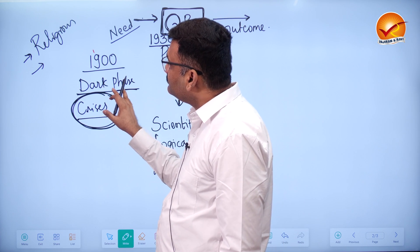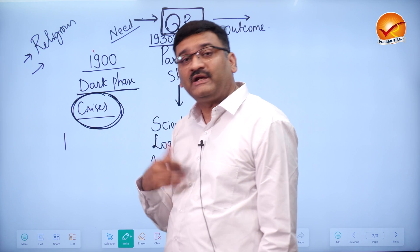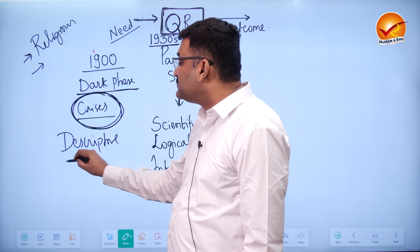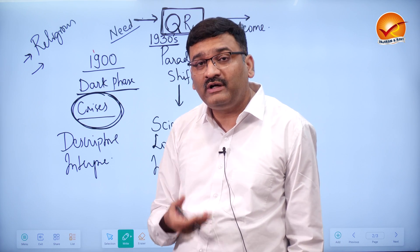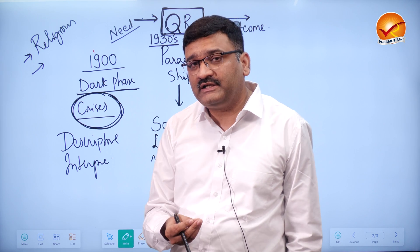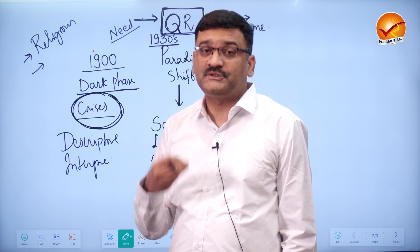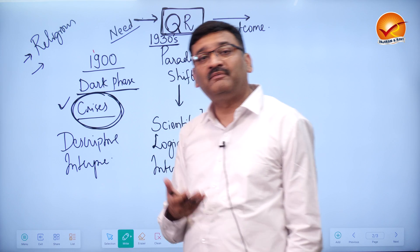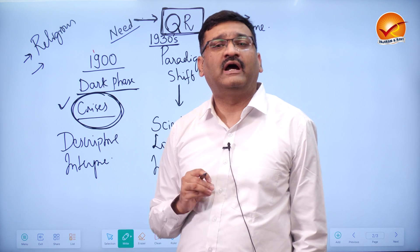This period at the end of 19th century was considered the period of crisis, identity crisis in geography. Why was there identity crisis? Because geography was dominated by religious dogmas. Many concepts of geography were under the clutches of religion; there was orthodoxy and superstitions influencing the study and literature of geography. In this dark phase, the literature of geography had grown voluminous, and geography became more descriptive and interpretative.